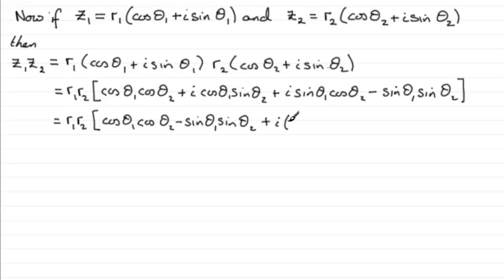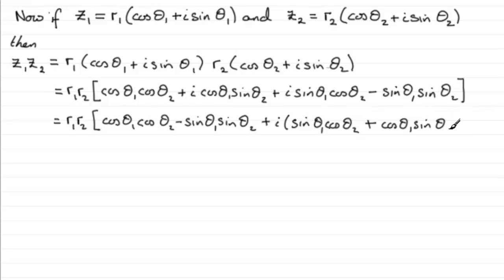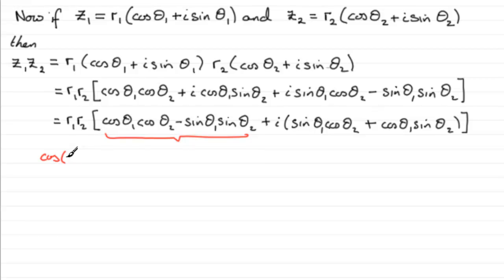For the imaginary part, we have i times (sine theta 1 cos theta 2 + cos theta 1 sine theta 2). Now, for the real part: cos theta 1 cos theta 2 minus sine theta 1 sine theta 2 — you should be familiar with your trig identities. This matches the cosine addition formula where A is theta 1 and B is theta 2.